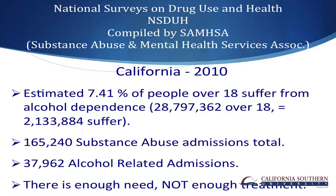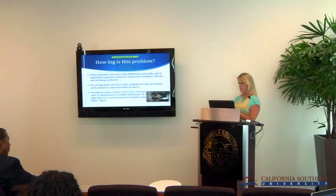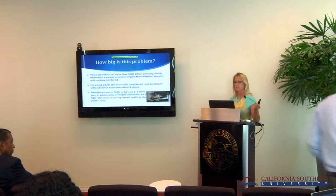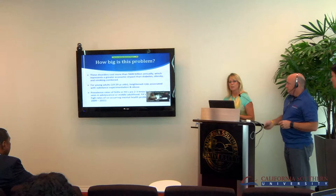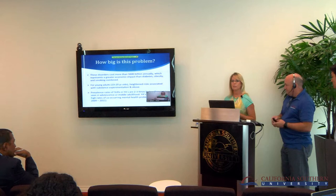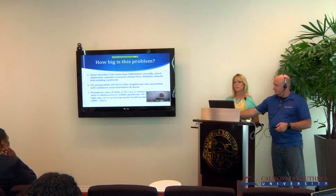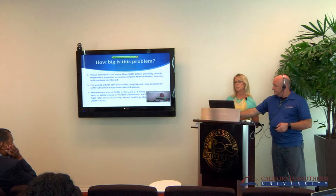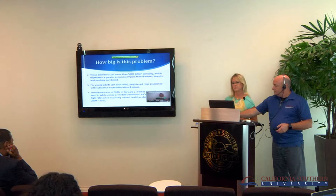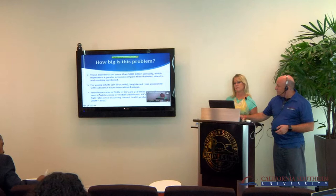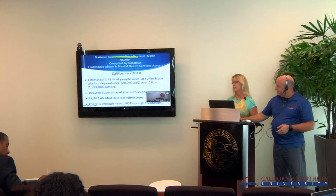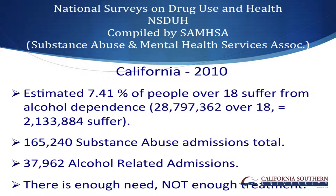Let's talk about California. An estimated 7.41% of people over the age of 18 have alcohol dependence. With 28 million people over 18 in California, over 2 million are suffering from substance abuse. In 2010, substance abuse admissions totaled just over 165,000 alcohol-related and nearly 38,000 others. If you do the math, many people who need treatment aren't getting it. There is plenty of need for treatment in California, but the numbers of those not receiving it are staggering.